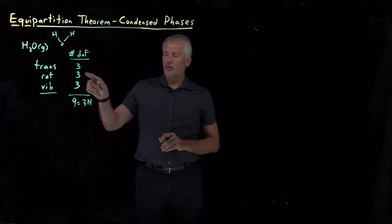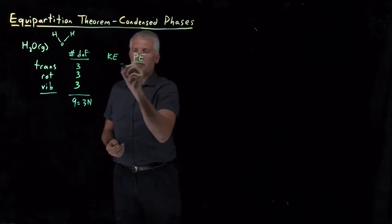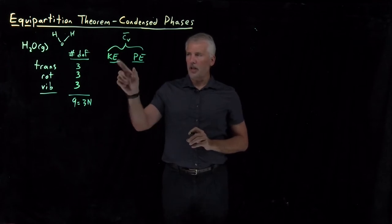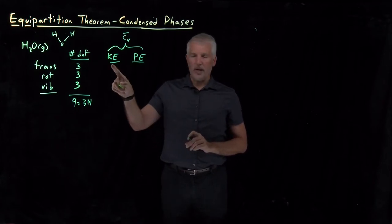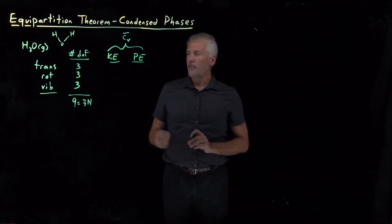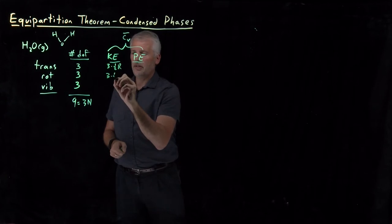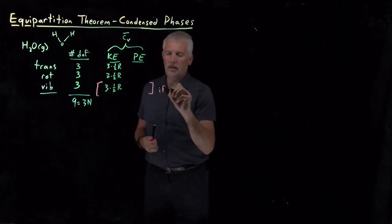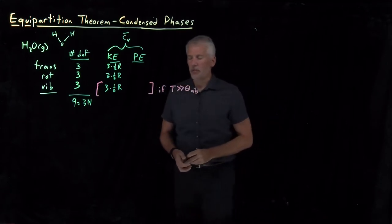The next step is to count how many degrees of freedom have quadratic contributions to the energy, distinguishing between kinetic and potential contributions. Kinetic energies are always quadratic — whether it's ½mv² or ½Iω² — so each of the three translational, three rotational, and three vibrational degrees of freedom contributes ½R. The vibrational contribution only applies if we're hot compared to the vibrational temperature, i.e., if vibrations can be treated classically.